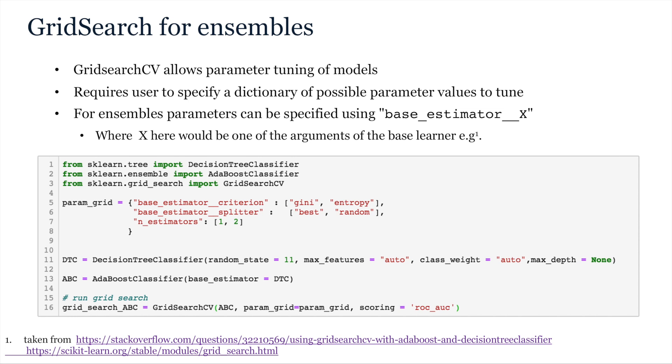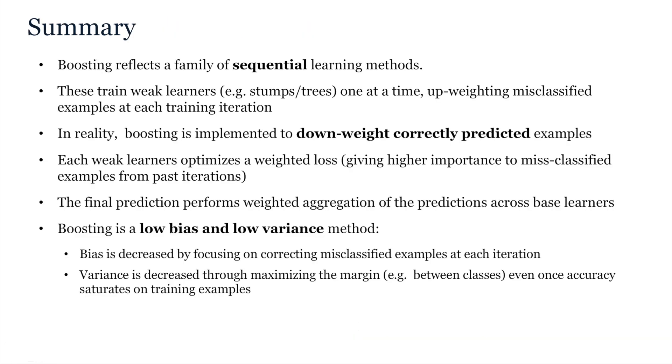To use it, you need to create a dictionary of possible parameters. So, typically what you would do for a non-ensemble method is just specify the name of the argument as the key, and then provide a list of parameters to tune on. However, for ensembles, if you want to optimize any of the parameters of the base learners, you have to specify these arguments prefixed with the base estimator keyword, noting the two underscores here, where this example from stack overflow shows nicely how it should be done.